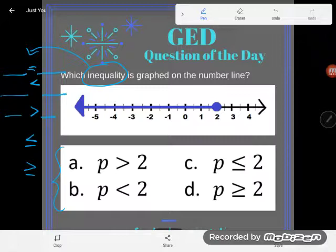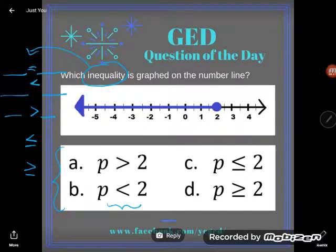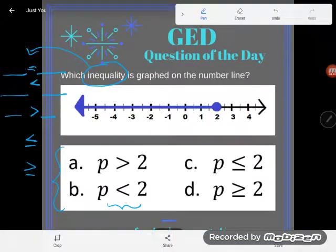The first thing you need to know is the difference between what we call the strictly less than and greater than signs, where your p's only relationship to 2 is that it's greater than 2 or less than 2. Those are strictly less than or greater than signs. When mathematicians want to talk about those, we use an open dot on the number line.